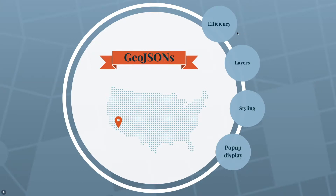One nice thing about GeoJSONs is they're quite efficient in terms of not only standardizing data across the internet, which makes moving data around a lot more efficient, but also in their structure they don't have a lot of extra fat. People will sometimes attach a lot of properties to different types of geographic data, which can make them really large, but in general these are stored in a pretty simple and efficient way.